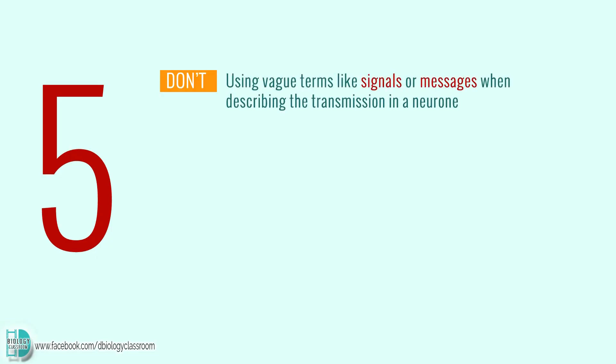Number 5: Using vague terms like signals or messages when describing the transmission in a neuron. The correct term to use is action potential or nerve impulses.